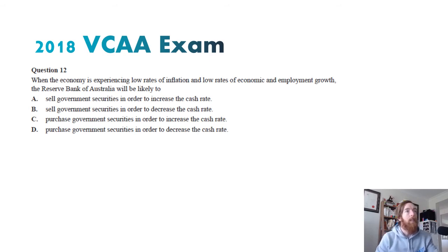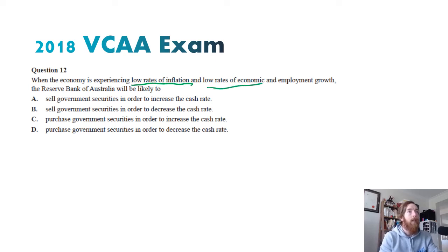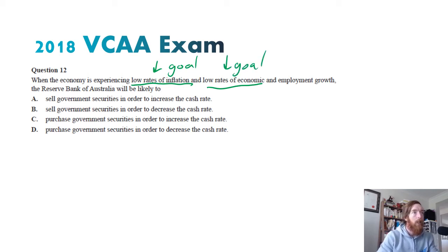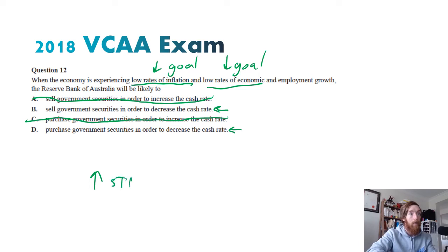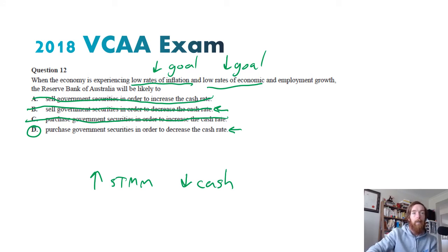Question twelve — when the economy is experiencing low rates of inflation, low rates of economic growth and employment growth — basically below goals — the Reserve Bank of Australia is going to decrease the cash rate, so we can immediately rule out two options. When the RBA wants to decrease the cash rate, they buy government securities because that increases the amount of money in the short-term money market, putting downward pressure on the cash rate. Selling securities would take money out. So D is the correct answer.